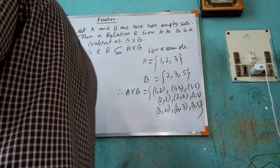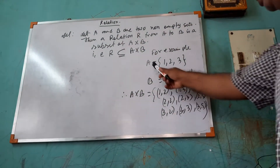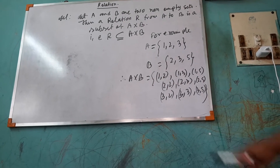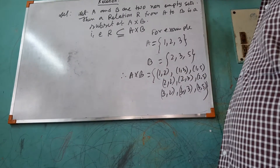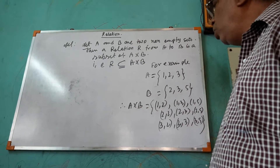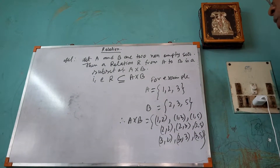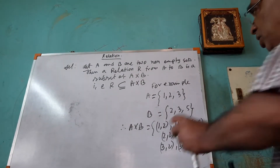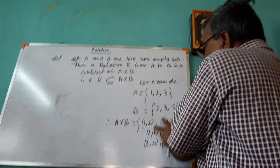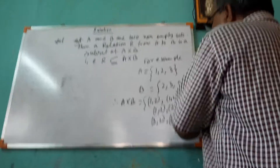A cross B is known as the Cartesian product of two sets. Now, what is a relation? From this A cross B, I am choosing, suppose, three elements — this, this, and this.